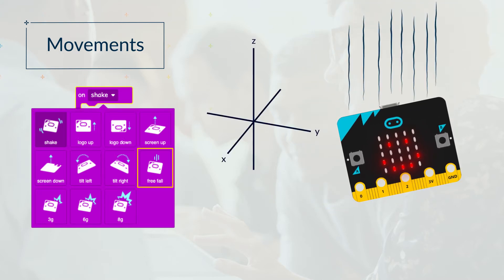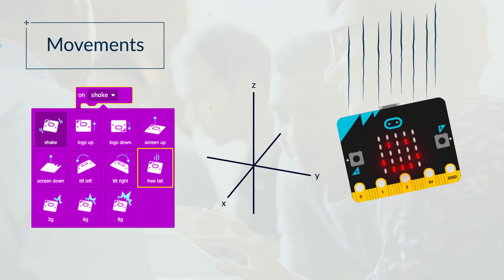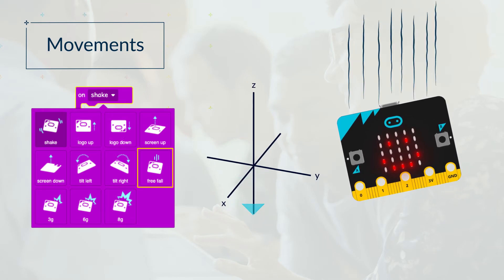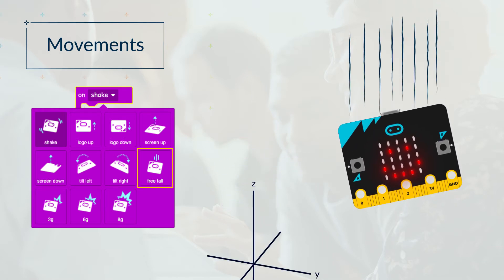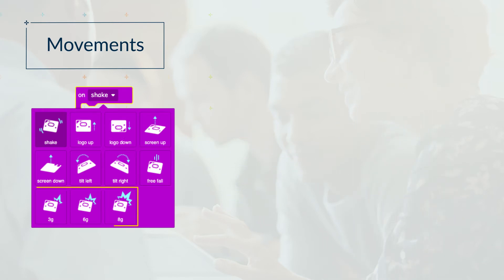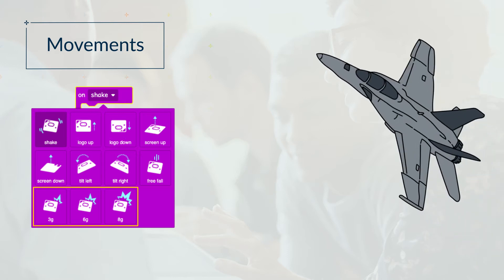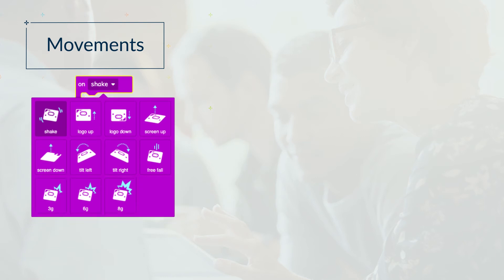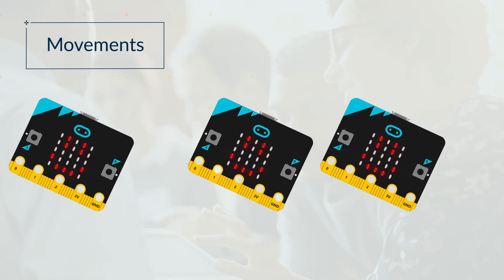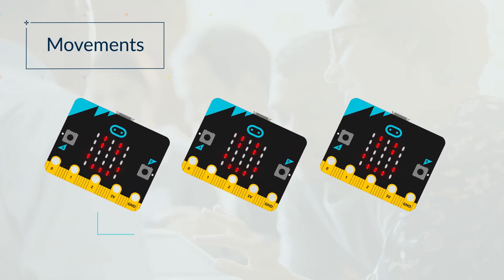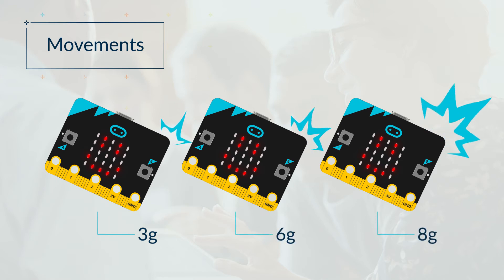Free Fall is if you drop it, so it's moving down the Z axis very fast. The last three are all about g-force, like the force that Air Force pilots feel when they accelerate really quickly. There are three levels: 3G detects the smallest sudden change, whilst 8G needs a much more sudden change.